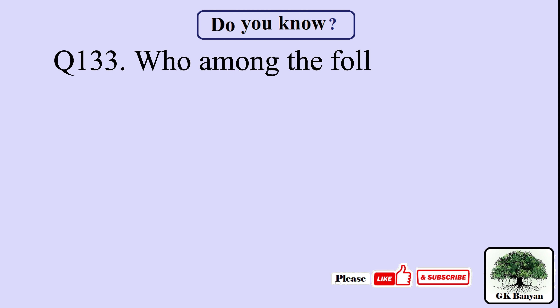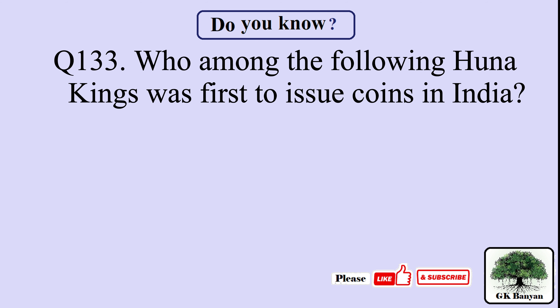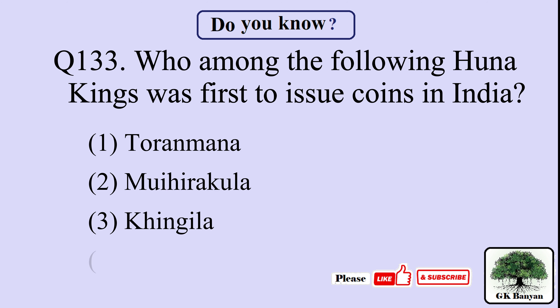Question 133. Who among the following Huna kings was first to issue coins in India? Your options are: A. Toramana, B. Mihirakula, C. Khingila, D. Yashovarman.